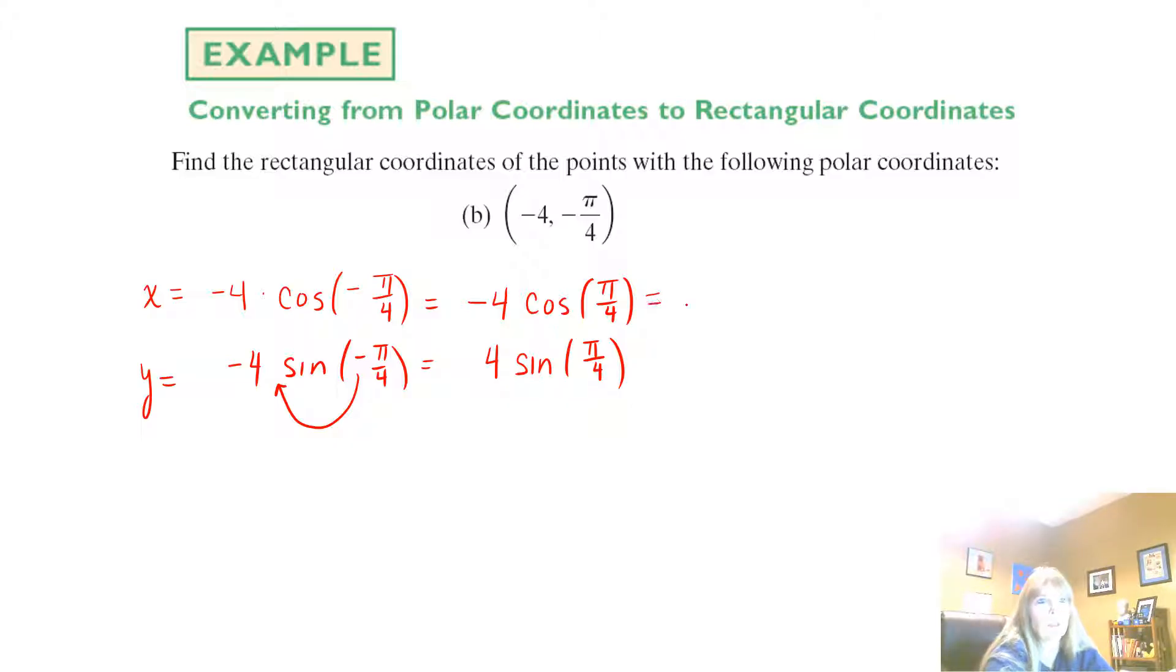And of course, these are the easy ones, right? Because they're the same, square root of 2 over 2 and square root of 2 over 2. And then finally, just simplifying things a little bit, I get negative 2 square root of 2 and 2 square root of 2.